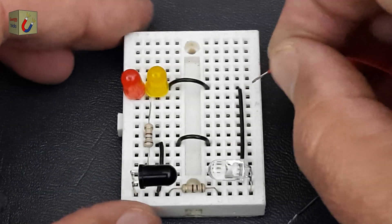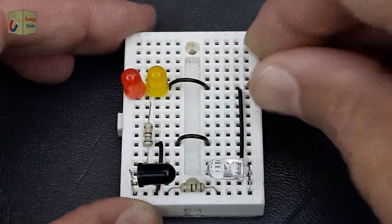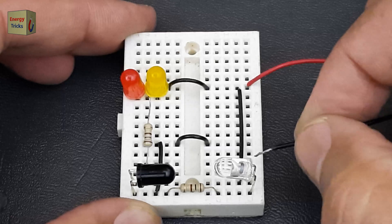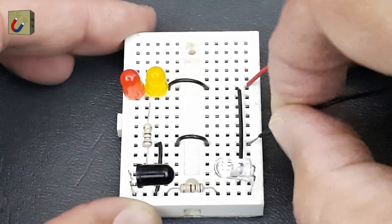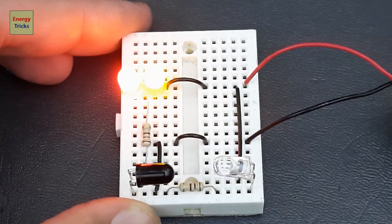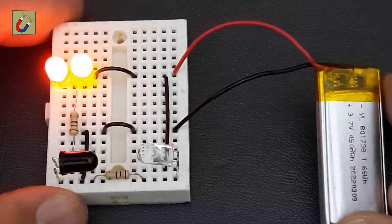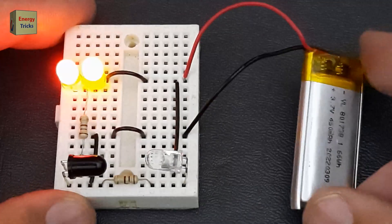Finally, connect a 3.7-volt battery to the circuit by attaching the positive and negative terminals to the appropriate connections on the breadboard. Once powered, both LEDs should light up, indicating the circuit is functioning correctly.